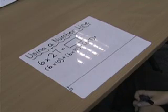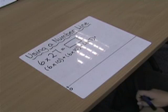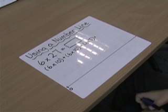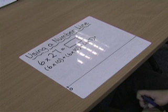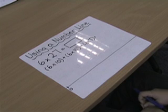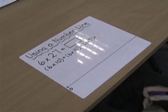Using a number line. 6 times 27 equals something. I know I have to break that into 6 times 10 plus 6 times 10 plus 6 times 7.